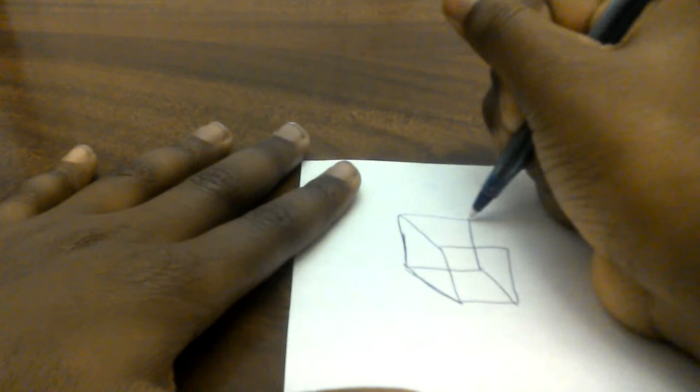First, for a basic square one, make a square for a square 3D object. Then, you'll make another one overlapping it, like this, you see? Then you'll make four lines to connect them. And like that, done.